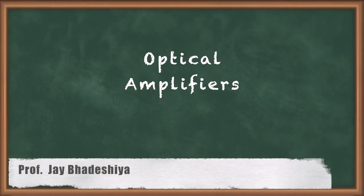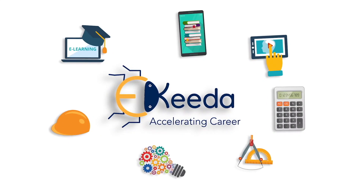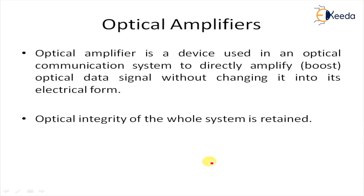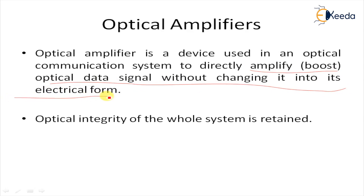Here we are going to learn about optical components and optical amplifiers. An optical amplifier is a device used in an optical communication system to directly amplify or boost an optical data signal without changing it into electrical form. The optical integrity of the whole system is retained, as the amplifier boosts the optical signal directly without the need to first convert it into an electrical signal.